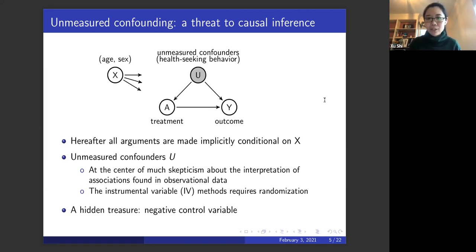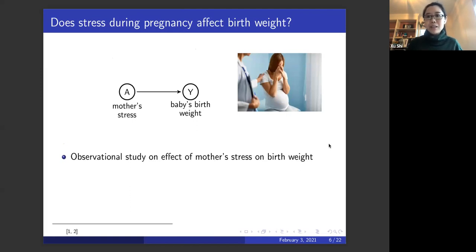Recently a new type of variable has gained increasing popularity: the negative control variable. We'll spend some time on the definition of negative control variables and how people have been using them to detect confounding bias and adjust for unmeasured confounding. To simplify notation we suppress the measured confounder X and use letter U to denote the unmeasured confounding, so all arguments are implicitly conditioned on X. To give you some definition of negative control, I'll use two examples.